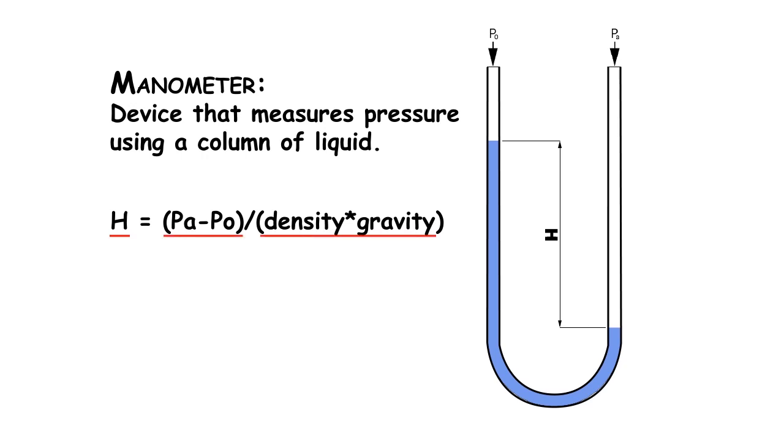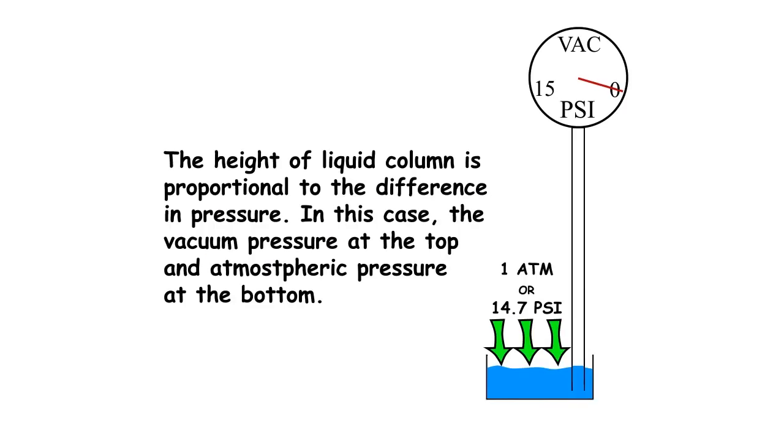Since different liquids are different weights, like mercury is heavier than water, this means that for a particular liquid, like water, you get a certain height for a certain pressure, always. You always get the same height for a given pressure.